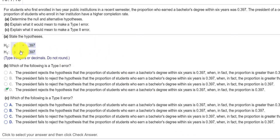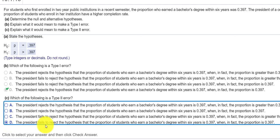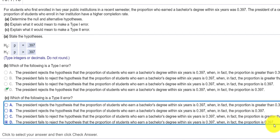This one would be where we failed to reject this. So if it is true that the completion rate is greater than 0.397, if we fail to reject this, that means we're accepting that the completion rate is 0.397. So if the president fails to reject this hypothesis, even when we know that it turns out that the proportion is indeed greater than 0.397.